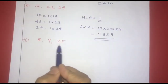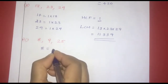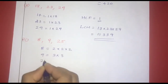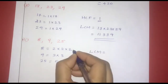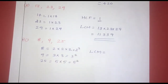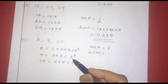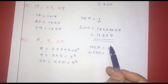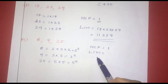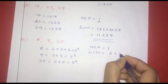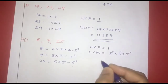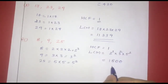Next one: 8, 9, 25. Writing the prime factors: 8 = 2 × 2 × 2, 9 = 3 × 3, 25 = 5 × 5. Taking the highest powers: 2 to the highest power is 3 (i.e., 2³), 3 is squared, and 5 is squared. Therefore, LCM = 2³ × 3² × 5² = 1800.